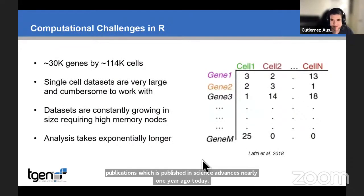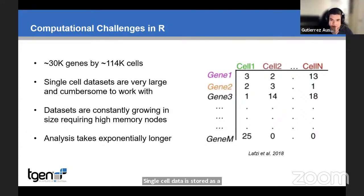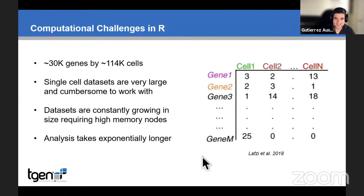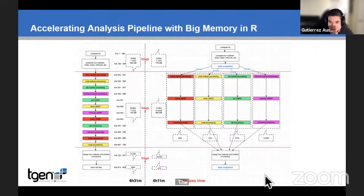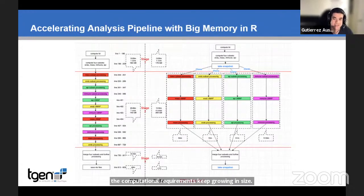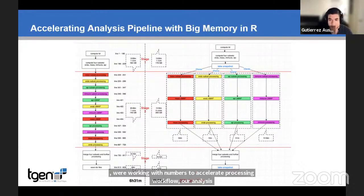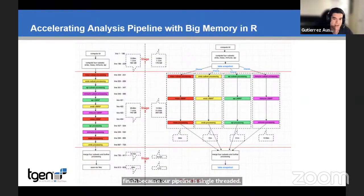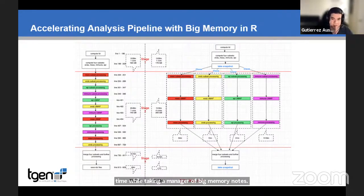Now let's move on to the computational challenges we encountered. Single cell data is generally stored as a matrix where rows are genes and columns are cells. In our dataset, we had a matrix of 30,000 genes by 114,000 cells, which required a large amount of memory in R. Our dataset keeps growing, meaning our computational requirements also keep growing. In order to speed up this analysis pipeline, we're teaming up with MemRage. Our analysis pipeline took six and a half hours from start to finish because it is stubbornly single-threaded. By utilizing the snapshotting and cloning capabilities of Memory Machine, we're able to parallelize the processing and save nearly 36% of computational time while also taking advantage of big memory Optane nodes. All the code and data is available on our GitHub page at github.com/tgen/BamAgeLab.